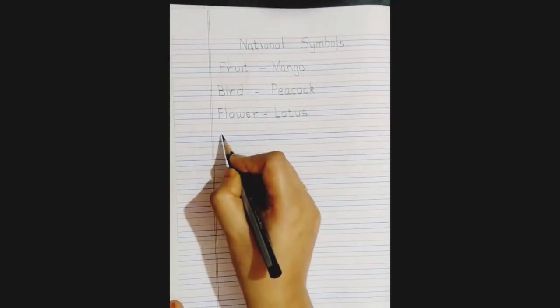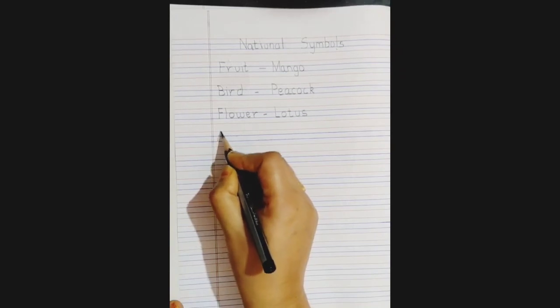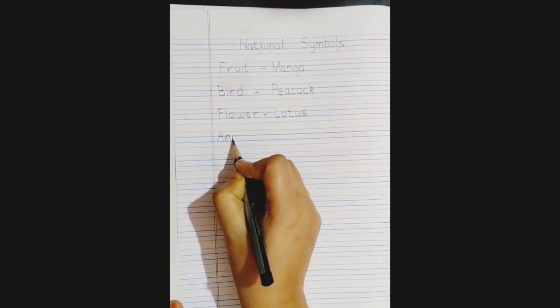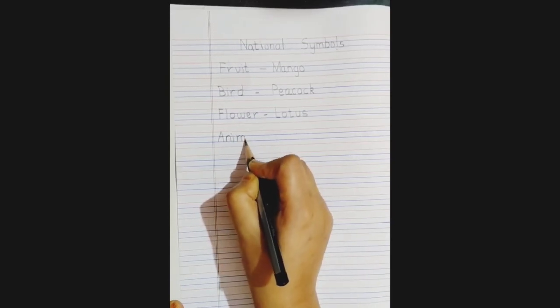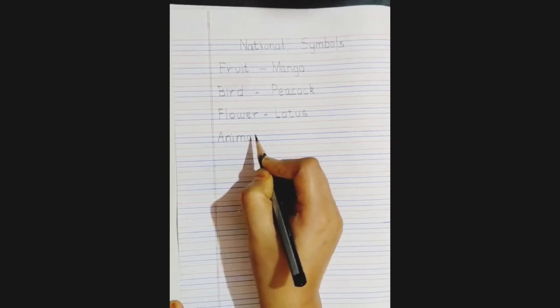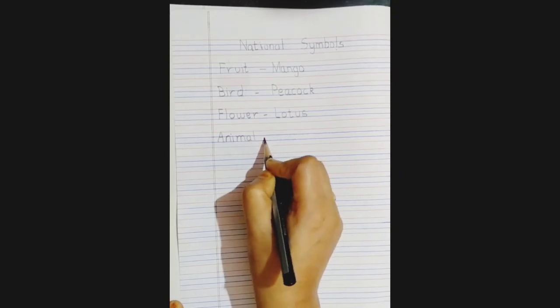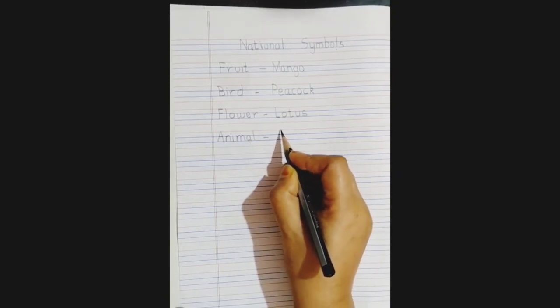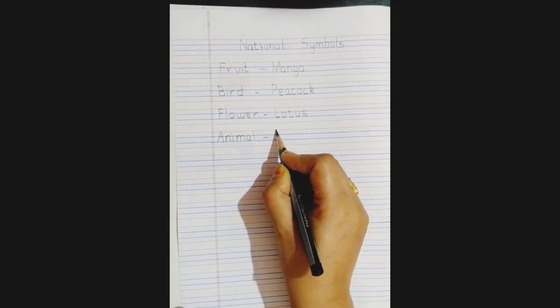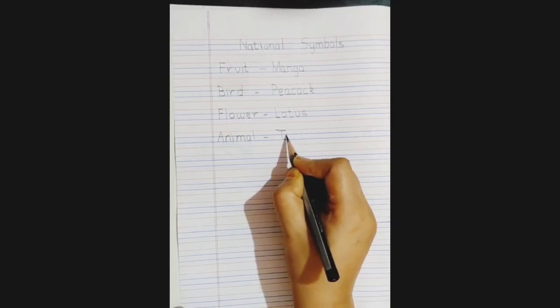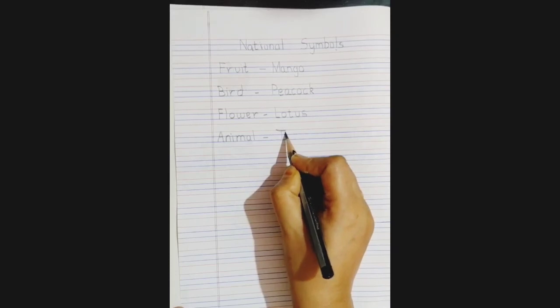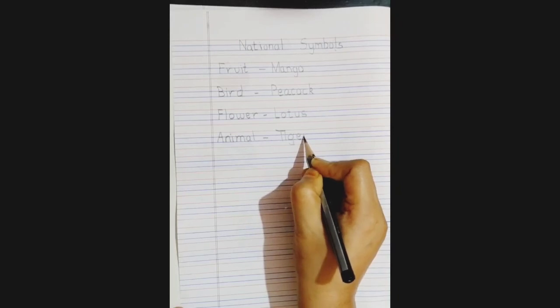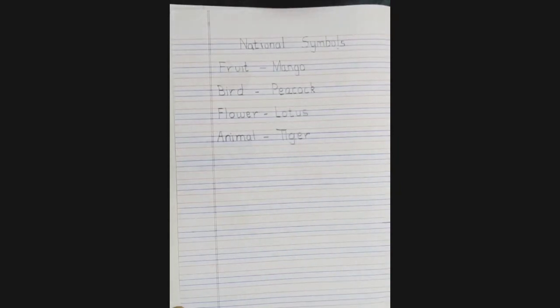National animal. A big A, N, I, M, A and L. Give a small dash and then write. Which is the national animal? Tiger. So we'll write tiger. A capital T, I, G, E and R. Tiger.